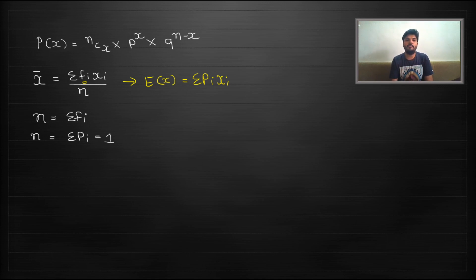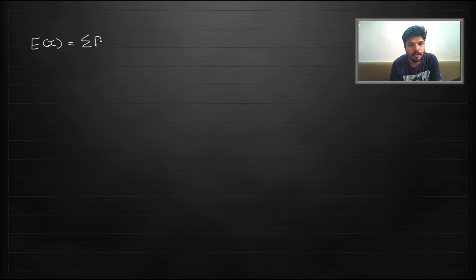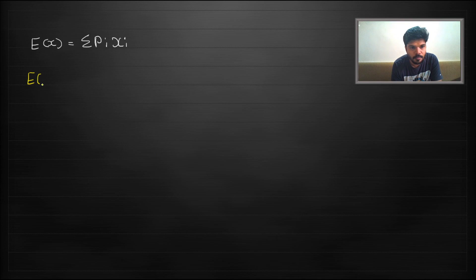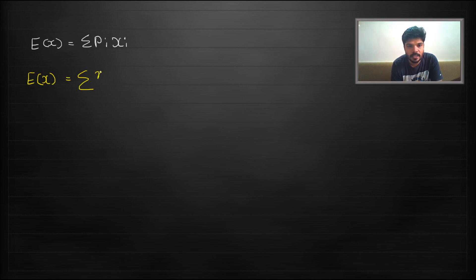Now let us start with the main derivation of the mean of the binomial distribution. We have established that the expected value of a probabilistic variable is sigma pi·xi, where pi denotes probability and xi denotes the value of the variable. In binomial distribution, this probability is represented by the probability mass function, so the expected value becomes sigma of nCx · p^x · q^(n−x) · x.